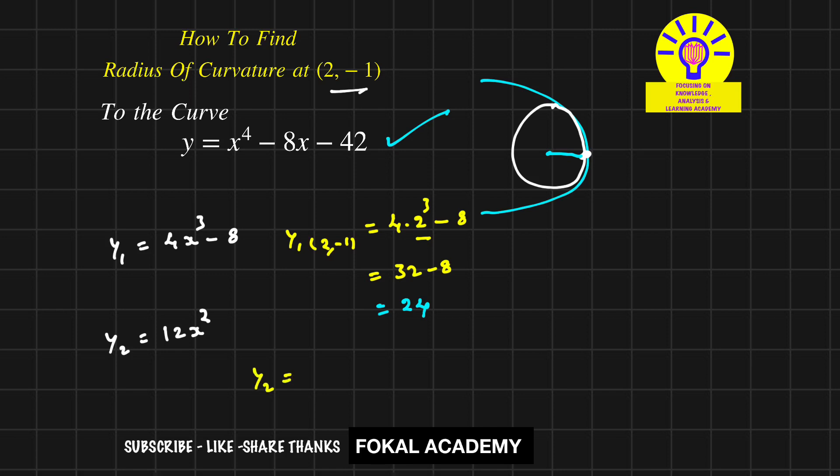Now y₂, substitute the same point, then we get 12 × 2², nothing but 12 × 4 is 48.